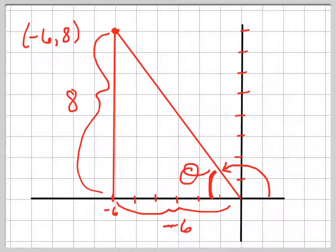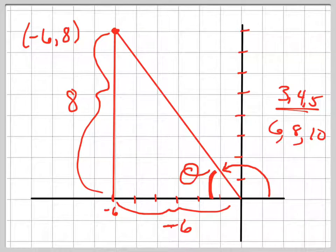And my hypotenuse, I could use Pythagorean's theorem, or I could just use the fact that this is a Pythagorean triple. Remember 3, 4, 5, 6, 8, 10 is another one. Just double them all. So that distance is 10.